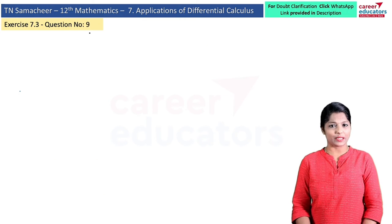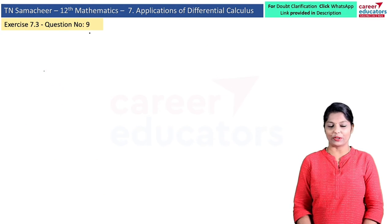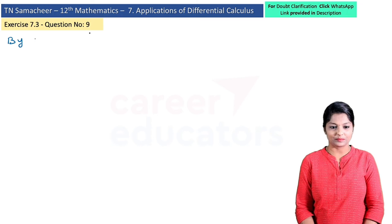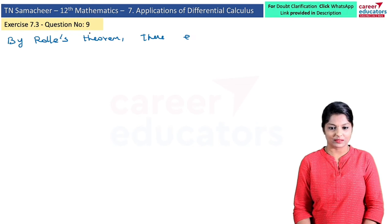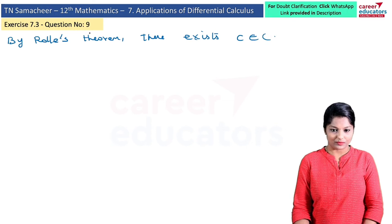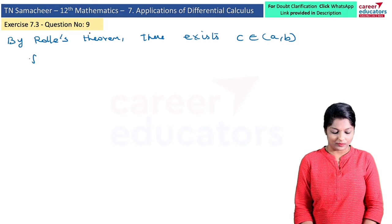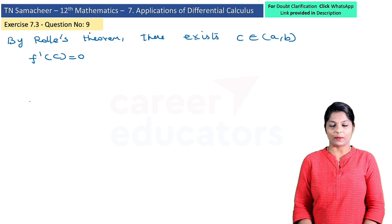All three conditions of Rolle's Theorem have been verified. By Rolle's Theorem, there exists a point c belonging to (a, b) such that f'(c) = 0. Now we apply Rolle's Theorem.